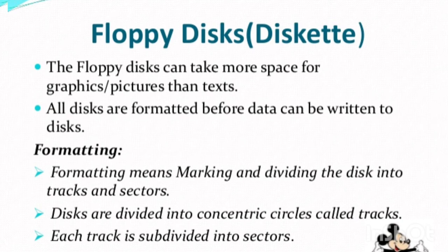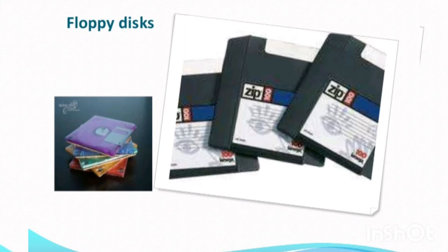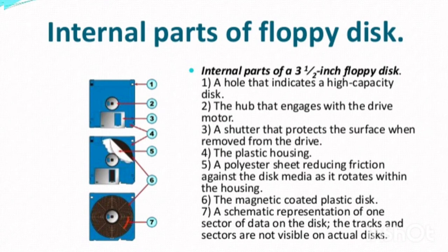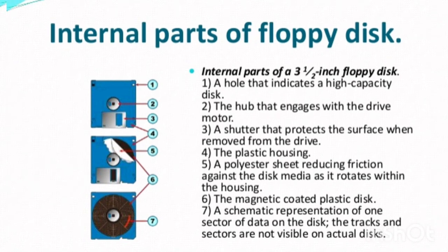The internal parts of the floppy disk include: plastic flap, spring, magnetic disk, shutter, and paper ring. These are the seven internal parts of the floppy disk. These seven internal parts are very important — if anything is damaged, then the floppy disk cannot work properly.